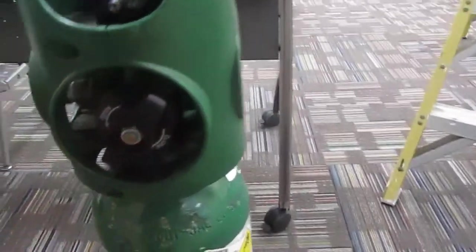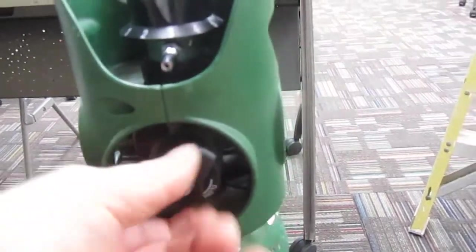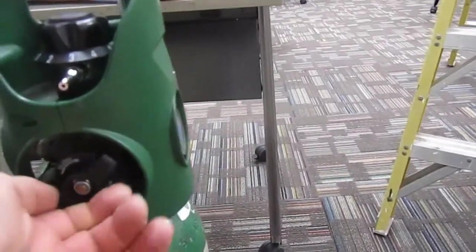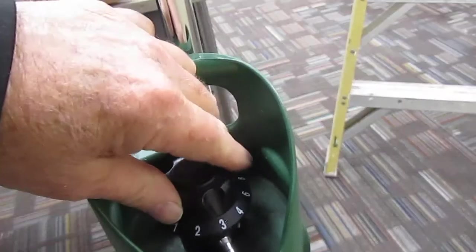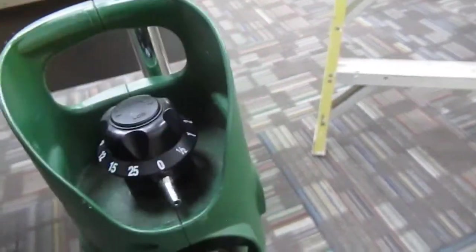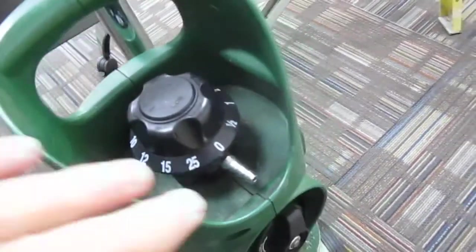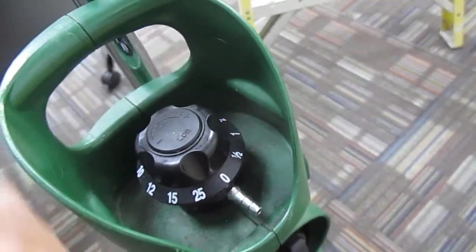There is an on and off valve. We'll open this up, and now there is a liter flow knob. We turn that to zero. If this is set at zero, nothing is coming out.